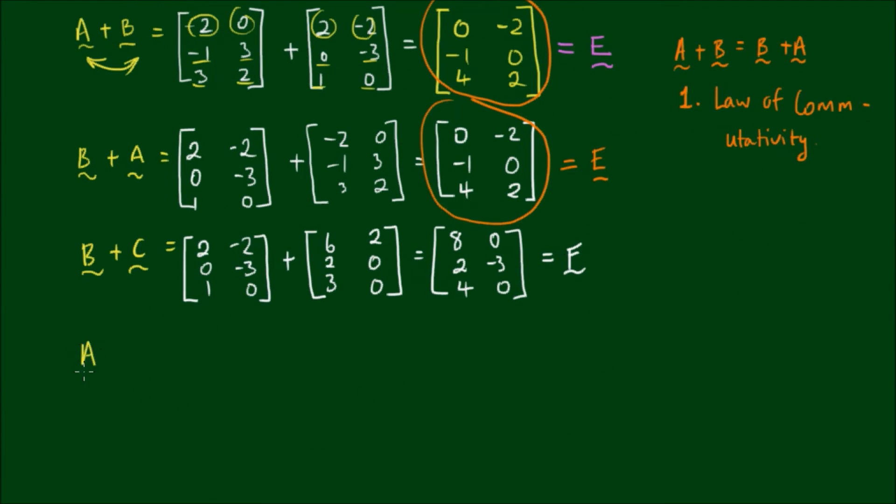And let's call this new matrix matrix F. Alright, so now if we sum up all of matrices A, B, and C, if I put a parenthesis around the addition of A and B, we know that the addition of matrix A and B equals the matrix E.